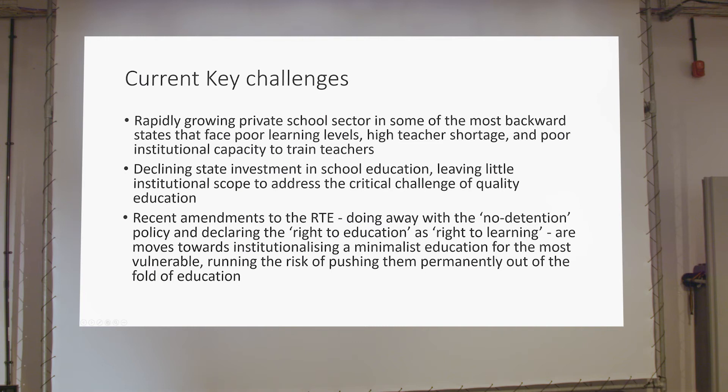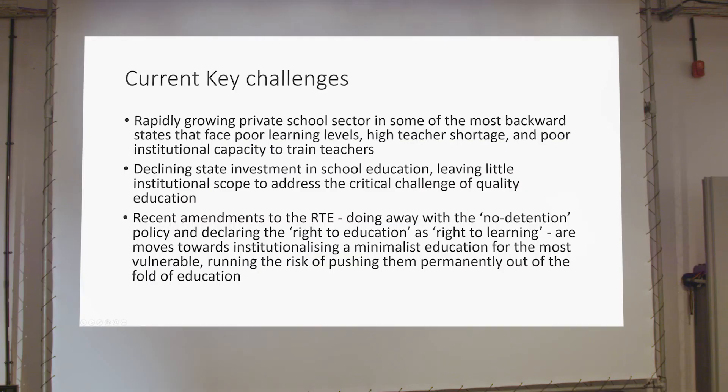The current key challenges are the rapidly growing private school sector in most of the backward states where there is poor institutional capacity. The learning levels of children — referred to as the learning crisis — are very low. Declining state investment in school education has continued, and after 2019 with this particular government there has been further decline. We now have very little institutional scope to address challenges of quality education, which is itself facing challenges in terms of neoliberal frames within which it is being defined.